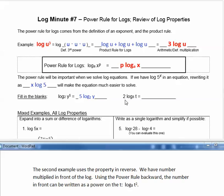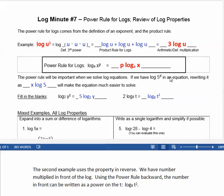The second example uses the property in reverse. We have a number multiplied in front of a log. Using the power rule backward, the number in front can be written as a power. So the 2 can be written as a power on the t: log base 8 of t squared.